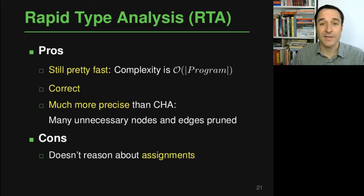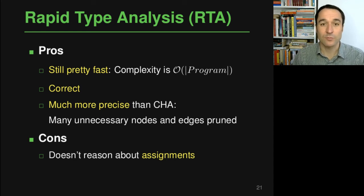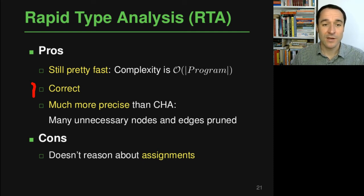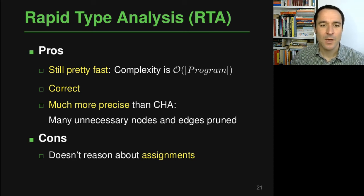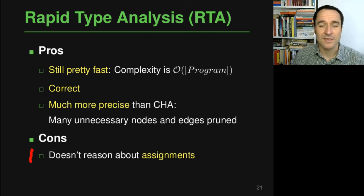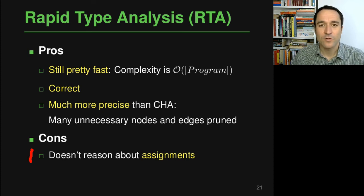Summarizing the pros and cons of rapid type analysis: it's still pretty fast — the complexity is in the order of the size of the program, since it only has to go through the program once to figure out which classes are instantiated without any more sophisticated analysis. It's also guaranteed to be correct, so whenever it removes a potential call edge, that edge certainly cannot really happen. It is much more precise than class hierarchy analysis, as many unnecessary nodes and edges can actually be pruned. However, it's far from perfect — the biggest disadvantage is that it doesn't reason about assignments, so as in the example with the new LinkedList constructor call, it doesn't know that this constructor call will never end up in variable c on which the add method is called.